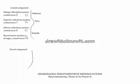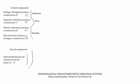Note that nucleus ambiguus also contributes minor visceral motor fibers to cranial nerve 10 with specific effects on the heart, but we exclude it here for simplicity's sake. The sacral nuclei are the intermediolateral cell column nuclei from sacral levels 2 through 4, residing in lamina 7 in the intermediate gray matter horn of the spinal cord.